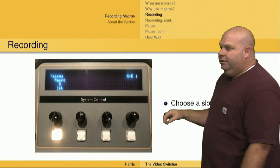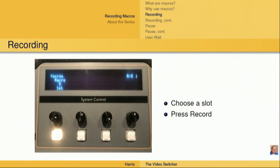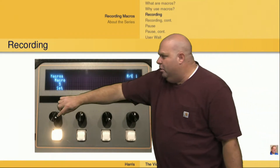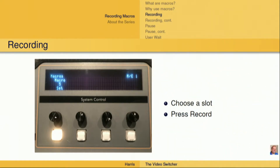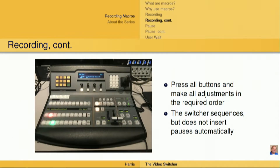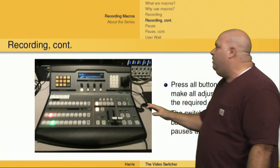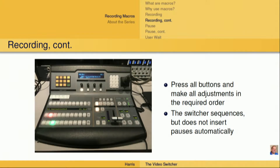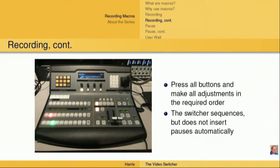So how do we record macros? On the last menu, we have the ability to choose the slot or the macro number that we can use. We do that by simply moving the dial — the macro number changes — and then we can push the record button on that last menu, which would then start us recording that macro. Once we're in recording mode, all we do is push the buttons and adjust the dials on the switcher that need to be set up as part of that recording. We want to do this in a very specific order, but most importantly the switcher only sequences the button pushes and the dial changes — it does not insert pauses automatically.